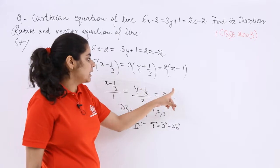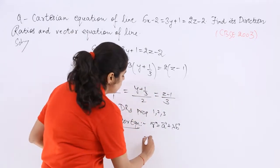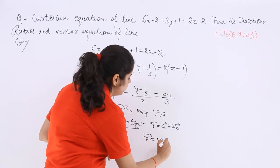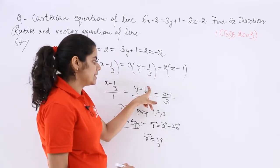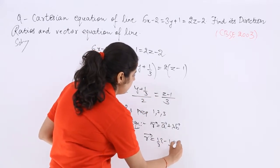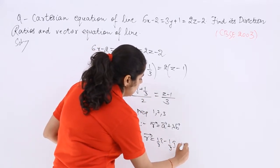So A is what? From which we can see with the help of points. So R is equal to A means 1 by 3 I cap, then here it is also there, so minus 1 by 3 J cap. Here it is plus K cap.